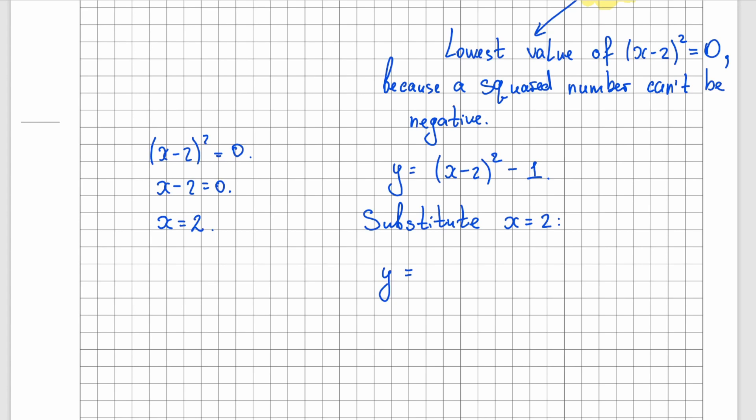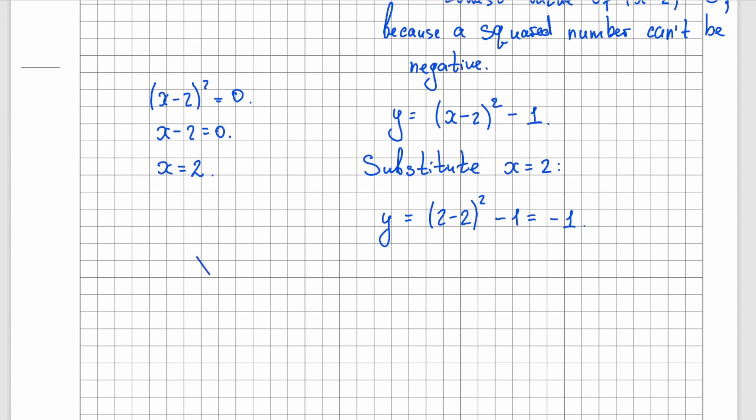Now when x equals to 2, the squared bracket equals to 0, because 2 minus 2 is 0. And we are left with negative 1. So the coordinates of the vertex will be 2 and negative 1.